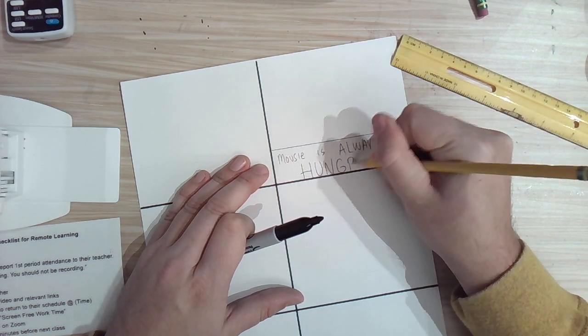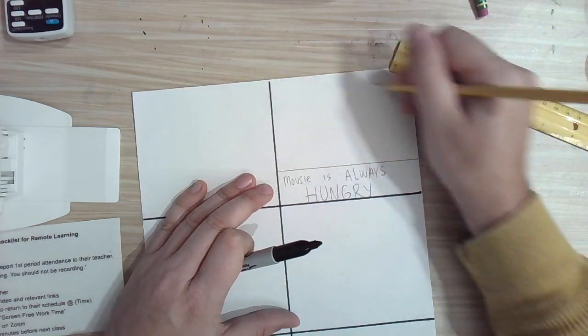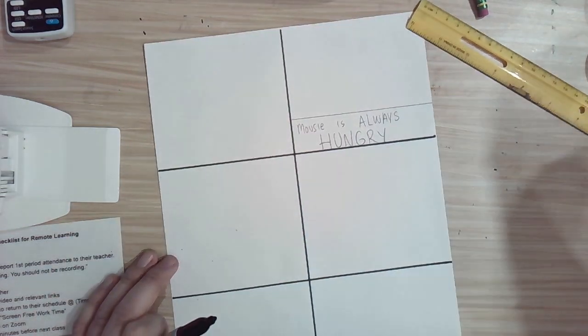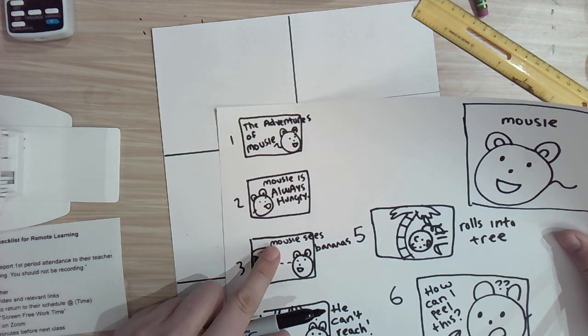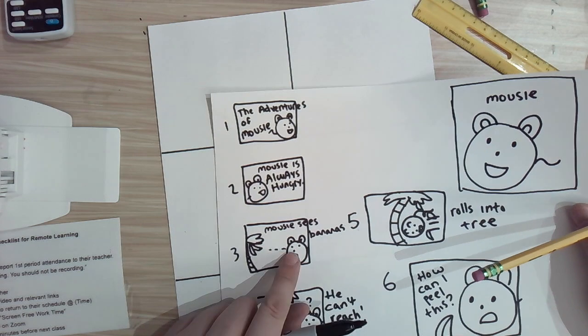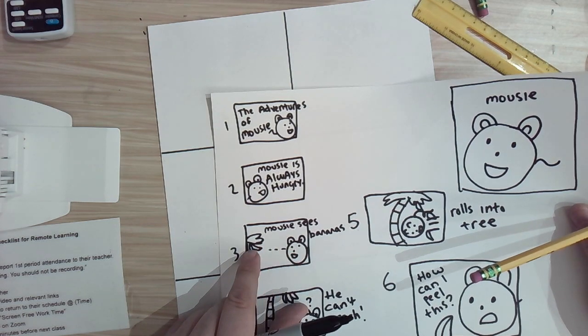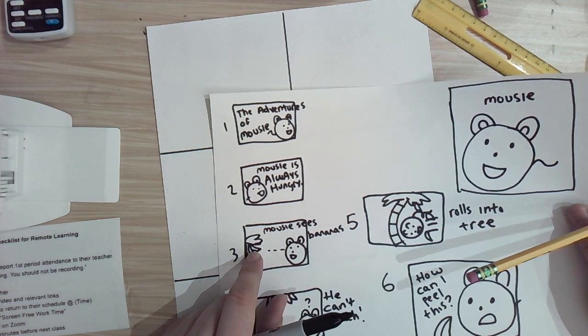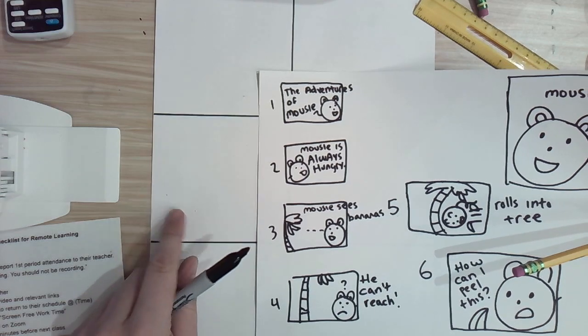I'm going to put hungry in nice big letters. And then the picture will be up here. My next frame, Mousy sees a banana. I don't think I need text there. I think I can show that just with some dotted lines going up to the banana and the Mousy clearly looking at it. So I don't think I need any text here at all.